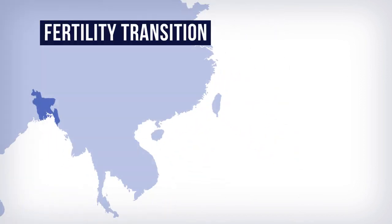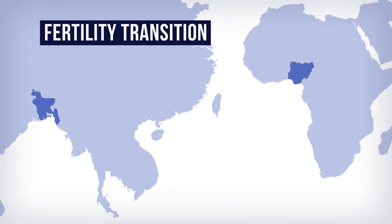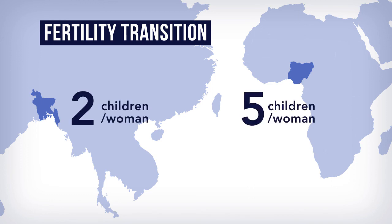The fertility transition has changed as well. Today, a woman has, on average, two children in Bangladesh, while a woman has more than five children in Nigeria.